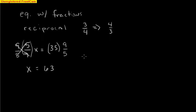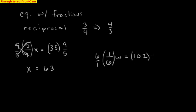One more: (1/6)w equals 102. w is being multiplied by the fraction 1 sixth. The reciprocal for 1 sixth is 6 over 1. Multiplying both sides by 6 over 1 cancels the fraction, leaving w. Then 102 times 6 over 1 — essentially just 6 — gives us 612. So that's a great review for your first quiz in Algebra 1, covering sections 1.1 through 1.3: variables in algebra and solving one-step equations by addition, subtraction, multiplication, division, or multiplying by the reciprocal.